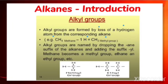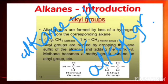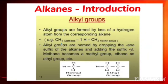From an alkane, when you remove one hydrogen you get the alkyl group. For example, CH4 is methane and when we remove one hydrogen from methane we get the methyl group. The alkyl groups are named by dropping the '-ane' suffix of the alkane and adding the suffix '-yl'.